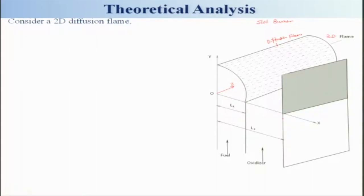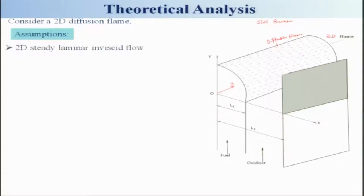Let us consider a simple case and make some assumptions — some of which will be repeated from what we have done for phenomenology. First, this is a two-dimensional, steady, laminar, inviscid flow. That means it is not viscous and it is steady.